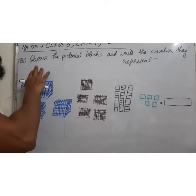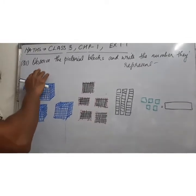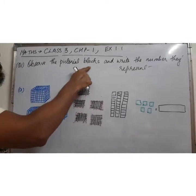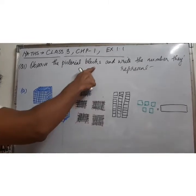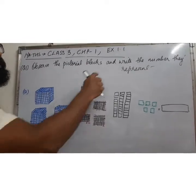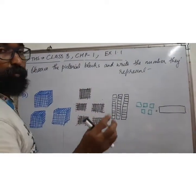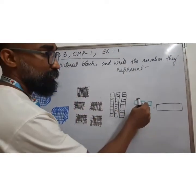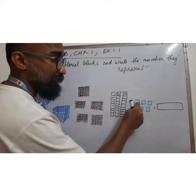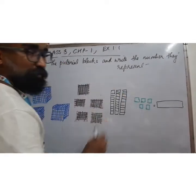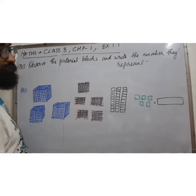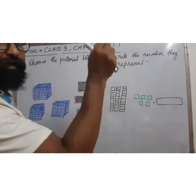Now the first question of Exercise 1.1, it says observe the pictorial blocks and write the numbers they represent. Now look at the numbers. Think about small chocolates. 1, 2, 3, 4, 5. This is 5. This is 1010 packet.